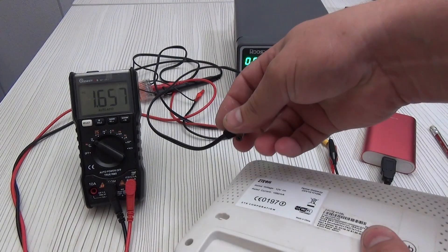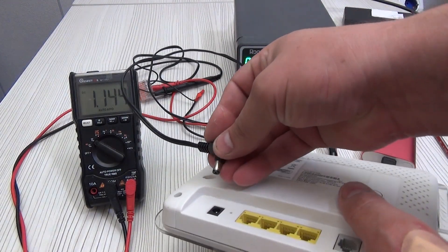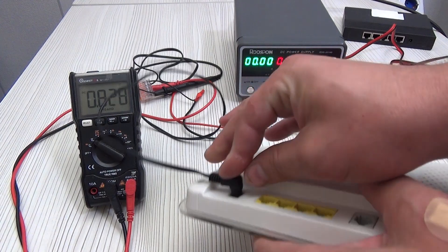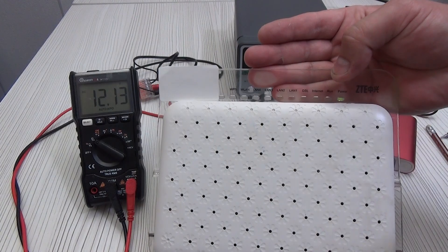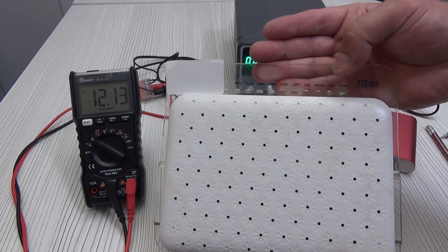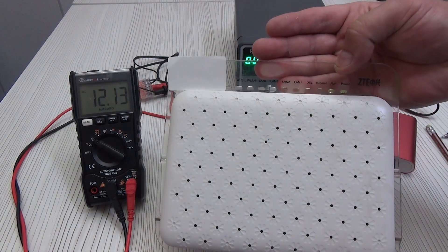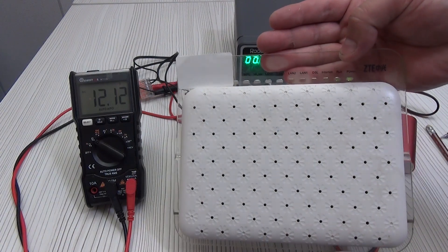Or take a Wi-Fi router for example, they often have a 12-volt power supply and a current consumption of up to 1 ampere. We increase the voltage to 12 volts. We connect the router, as we can see, it started working. Also an option for organizing the uninterrupted operation of your network equipment or other smart home devices.